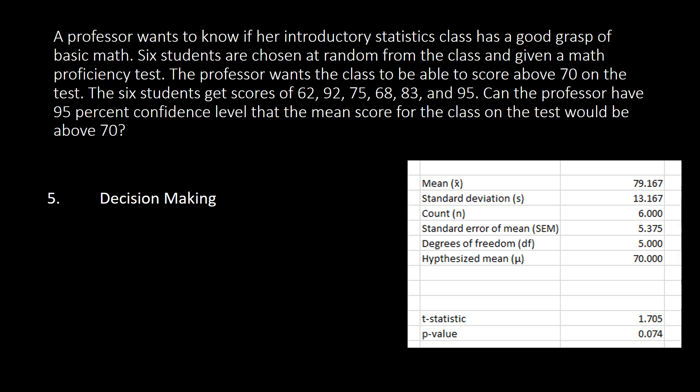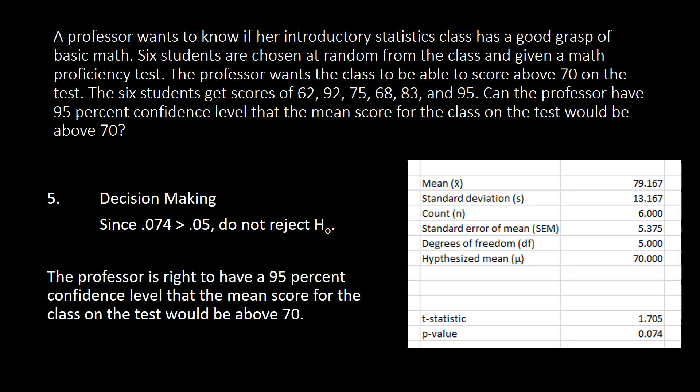And then we are now ready for our decision making. Since our p-value 0.074 is greater than our level of significance, which is 5%, then our decision will be do not reject H0. So meaning to say that the professor is right to have a 95% confidence level that the mean score for the class on the test would be above 70.